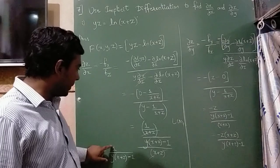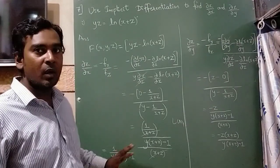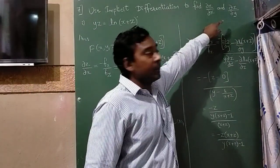This and this get cancelled, we are remained with 1 divided by y x plus z minus 1. Now the second part,